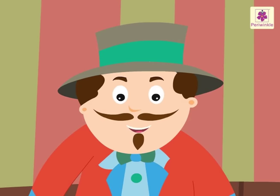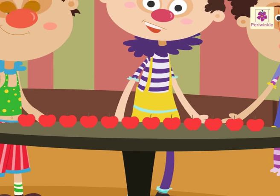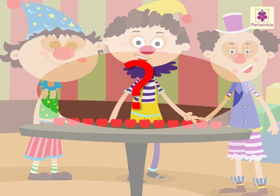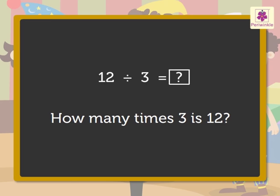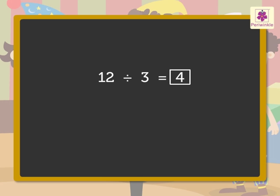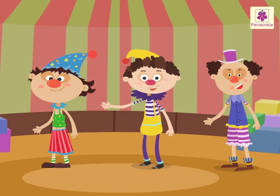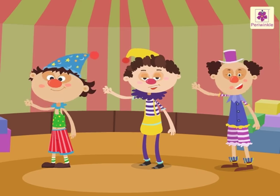Another way to write the division sentence is: how many in each group? So we say there are 12 apples and there are 3 clowns — how many apples will each clown get? We write: 12 divided by 3 is equal to how much? How many times 3 is 12? Correct — 4! So 12 divided by 3 is equal to 4. Therefore, each clown will get 4 apples. Wasn't that easy to learn with Jumbo, Jimbo, and Jojo? And it was fun too!